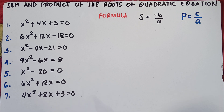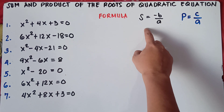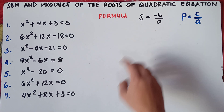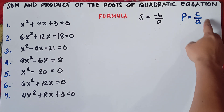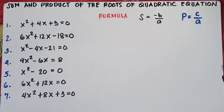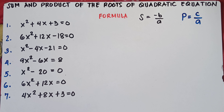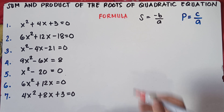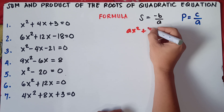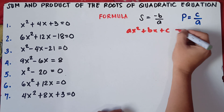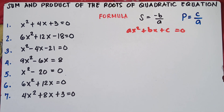The formula to get the sum is S equals negative B over A, and to get the product, that would be P equals C over A. Before answering, you need to know the standard form of a quadratic equation, which is AX squared plus BX plus C equals 0. Because we need to find the value of A, B, and C in the given equation.